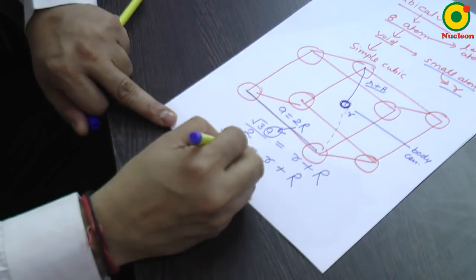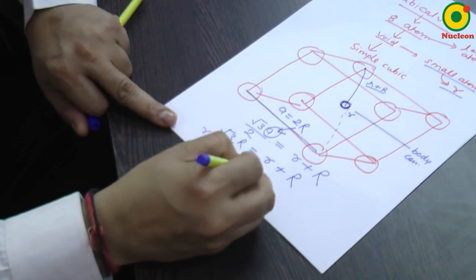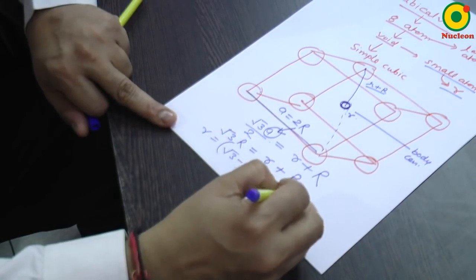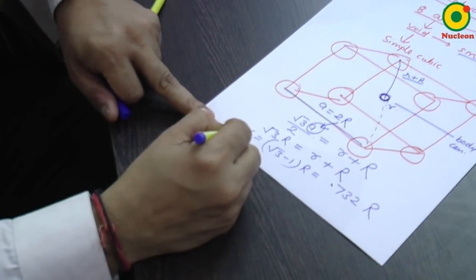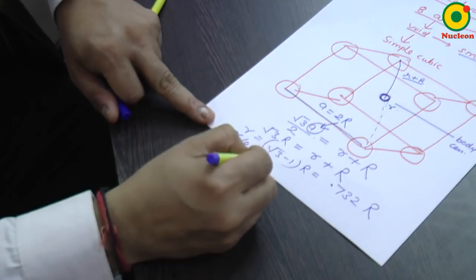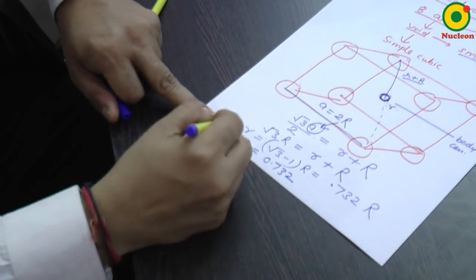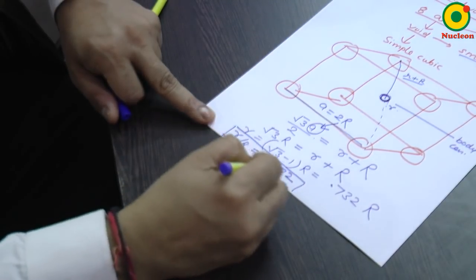So, r is equal to root three minus one into R is equal to 0.732 into capital R. So, the radius ratio r by R will be equal to 0.732 for cubical void.